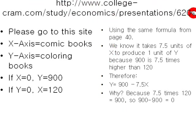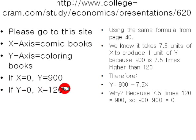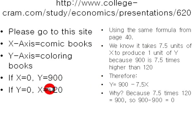Now go to this website — I'm going to place the link in the description. The X-axis on this particular website is comic books and the Y-axis equals coloring books. So that means if we produce zero comic books, a maximum of 900 coloring books can be produced. If you produce zero coloring books, then 120 maximum comic books can be produced. So 120 units of labor is going to be the constraint, or the limit. For one unit of comic books made, there's an opportunity cost of 7.5 units of coloring books.